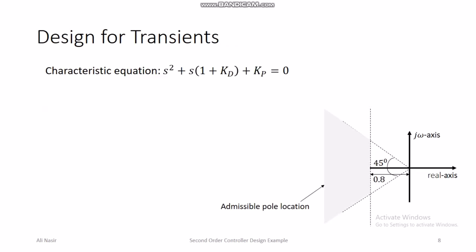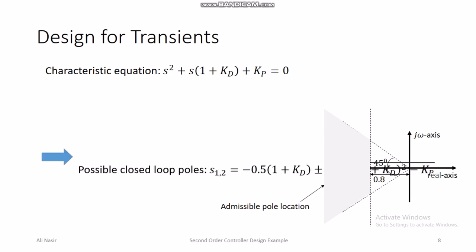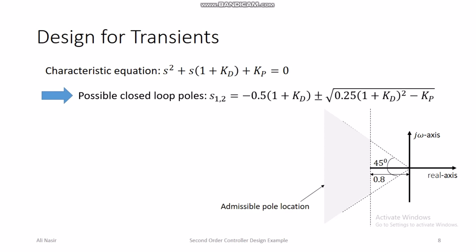For transient design, the characteristic equation becomes s² + (1 + kd)s + kp = 0. With the PD controller we can place the closed loop poles anywhere because we can set the coefficient of s to any value by choosing kd, and the constant coefficient to any value by choosing kp. This gives us the freedom to place poles in the admissible region.